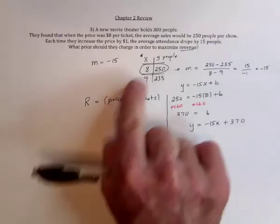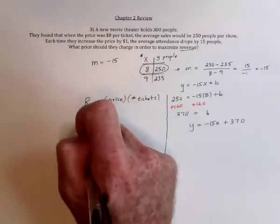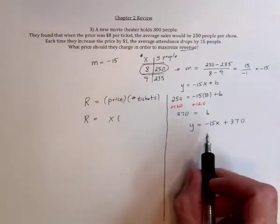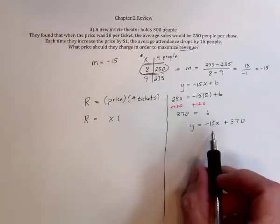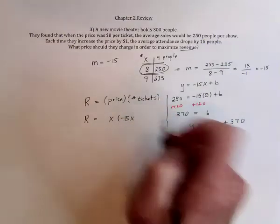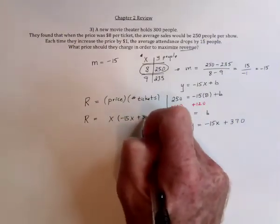Well, the price, we did that over here. That's X. So the revenue is going to be X. And the number of tickets, well that's why we did all of this work over here. Number of people, negative 15X plus 370.